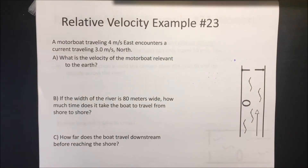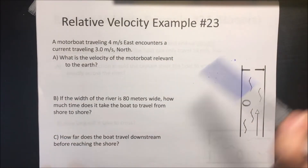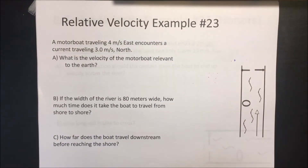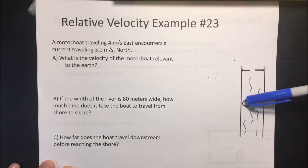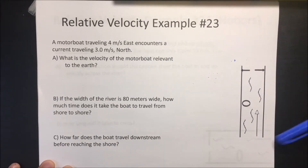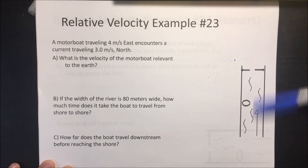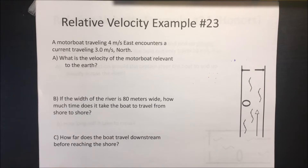Hi everyone, welcome back to vectors — this last section on relative velocity. A motorboat traveling 4 meters per second East encounters a current traveling 3 meters per second North. What is the velocity of the motorboat relative to the Earth?